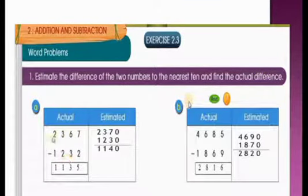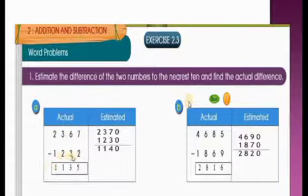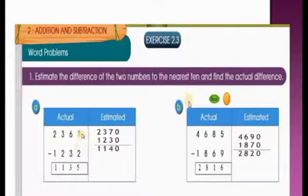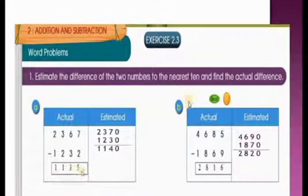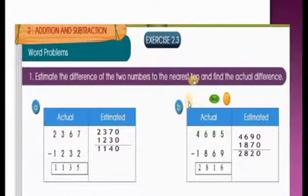So let us solve. The given problem is 2,367 minus 1,232. So when you subtract: 7 minus 2 is 5; 6 minus 3 is 3; 3 minus 2 is 1; 2 minus 1 is 1. So the actual answer is 1,135.